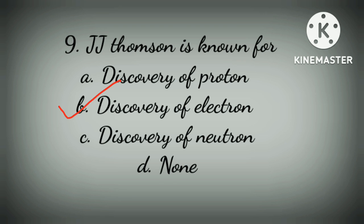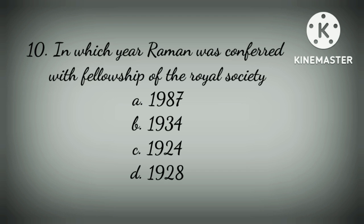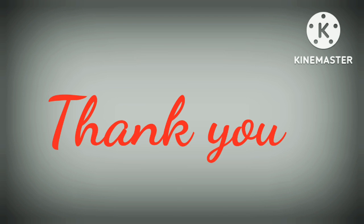Question 10, the final question for today: In which year was Raman conferred with the Fellowship of the Royal Society? Option A: 1987, Option B: 1934, Option C: 1924, Option D: 1928. The correct option is Option C — 1924.